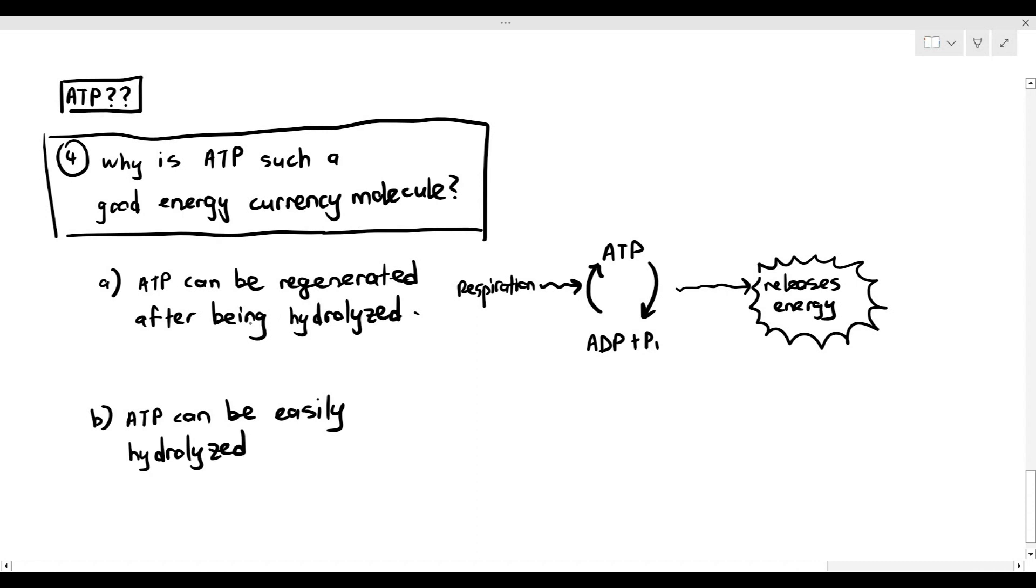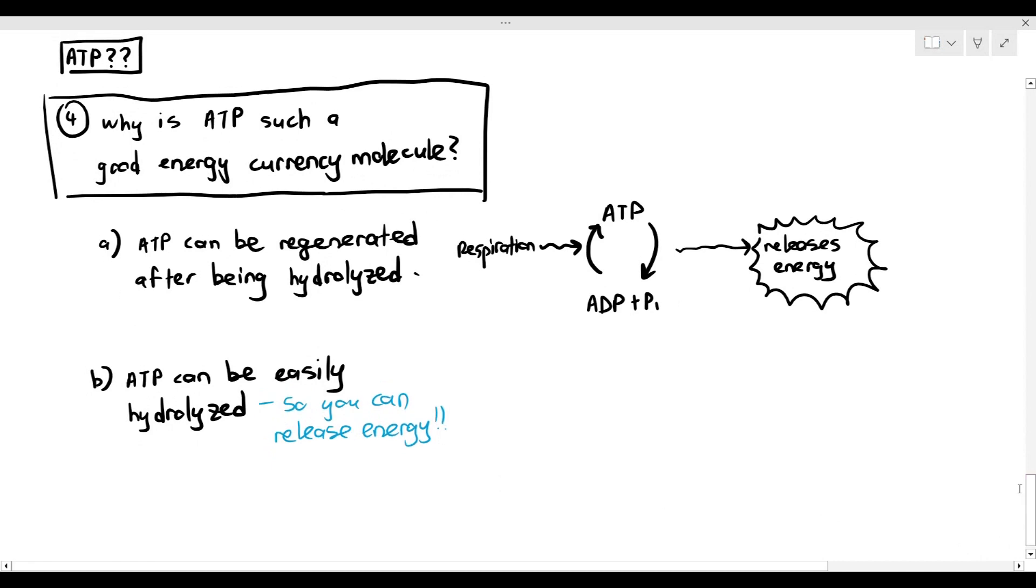Second thing, ATP is also a molecule that can be easily hydrolyzed. You don't want a molecule that is stingy with its energy. You want a molecule that when the cells need energy, ATP can immediately provide it. So you can release the energy when the cells immediately require it.